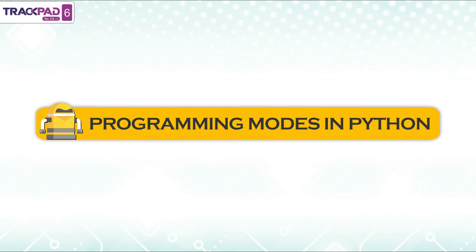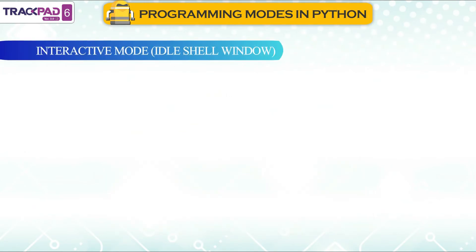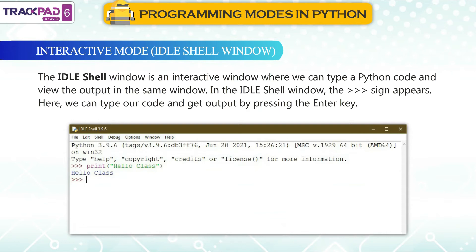Programming modes in Python: Python provides two basic programming modes — interactive mode and script mode. In interactive mode, the IDLE shell window is an interactive window where we can type Python code and view the output in the same window. The arrow sign appears at the command prompt, and we can type our code and get output by pressing the Enter key.